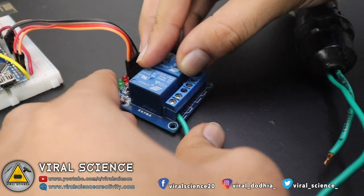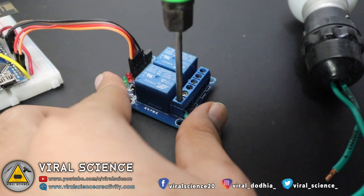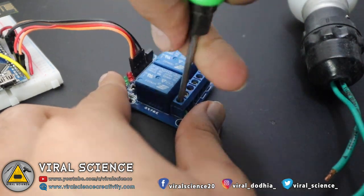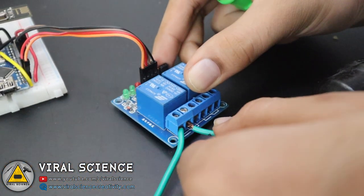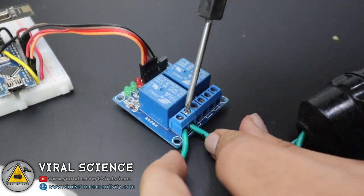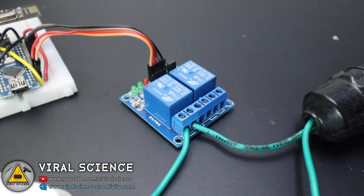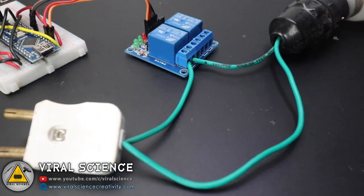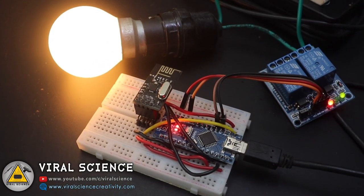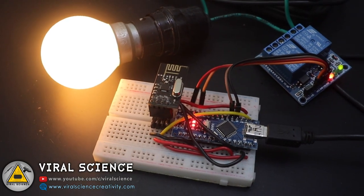The relay will turn on and off by completing and breaking the circuit. Be very careful while doing this connection because we are using very high voltages. You can even take help of an electrician. Now our project is ready, and we will test it out.